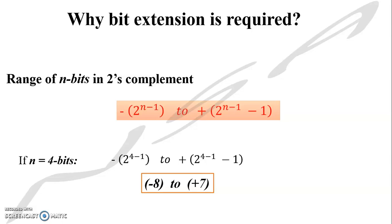You can do bit extension when you have a restriction that data must stay within 4 bits. If your answer is plus 8, it doesn't fit in the range from minus 8 to plus 7 — there is no value for plus 8. So I will do one bit extension, making it 5 bits. With 5 bits, the range increases. If the bits increase, the range increases, and if we extend bits accordingly, we can increase the range to accommodate our result.